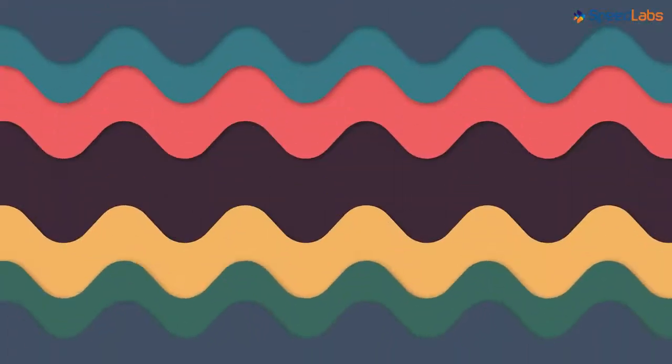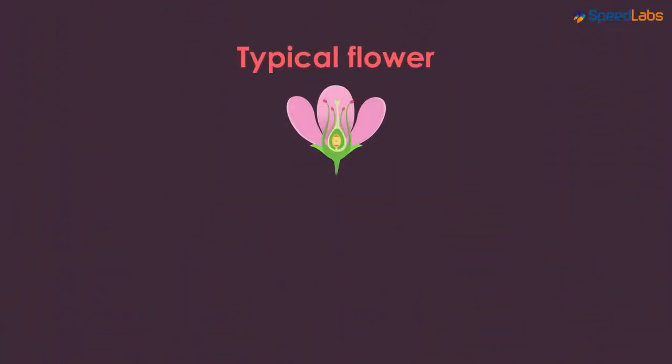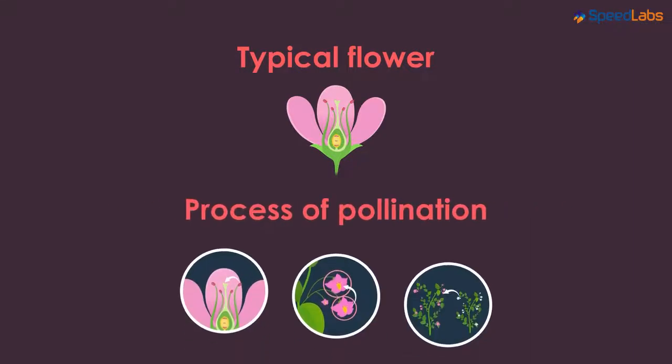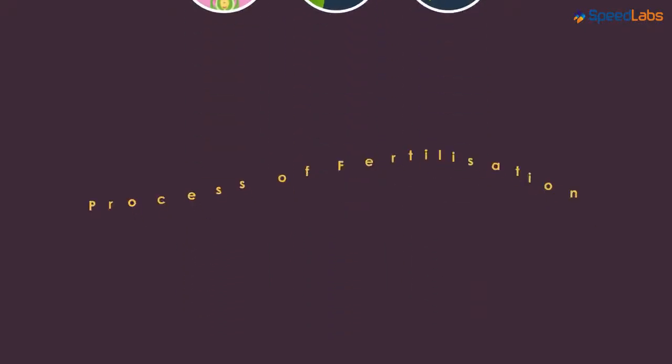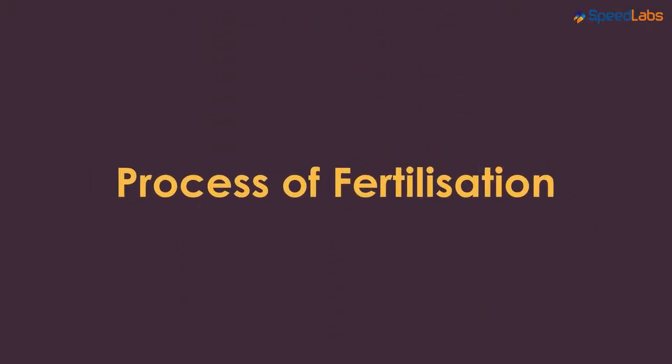Now that we have learnt about the typical structure of a flower, as well as the process of pollination, let's find out what happens after pollination is successfully carried out. Next, let's look at the process of fertilization in detail.